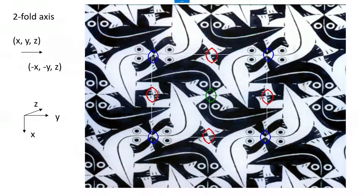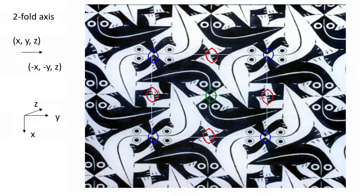We have identified the position of the two-fold axis here in this two-dimensional object. Once we have identified the two-fold symmetry here, automatically a two-fold symmetry appears at other points due to the unit translation. So if you take any point x, y, z in the two-dimensional space, it will use the rotation axis. The rotation axis is perpendicular, so everywhere you can think of two-fold rotations occurring in this space. Mathematically, x, y, z will go to minus x, minus y, z.